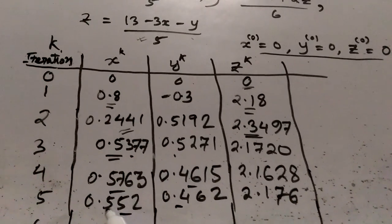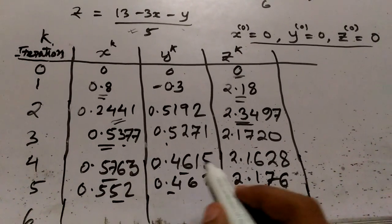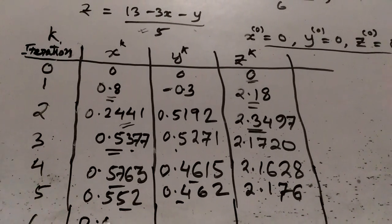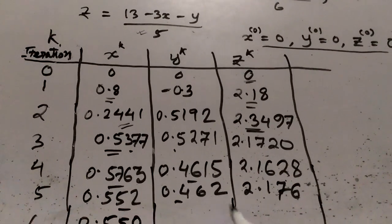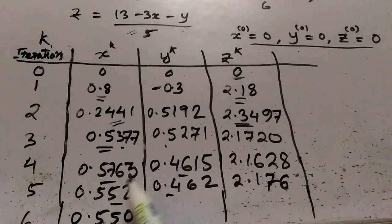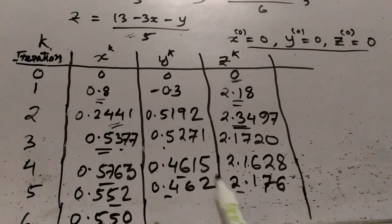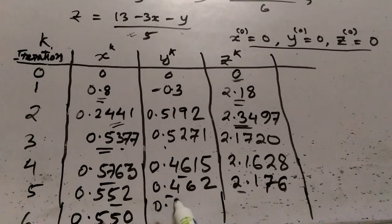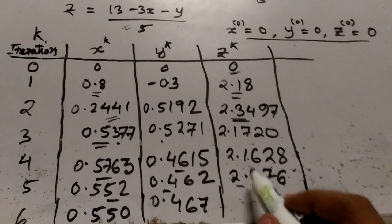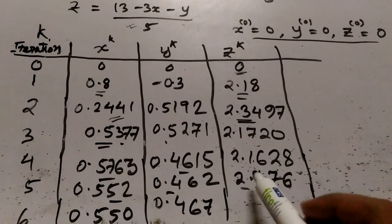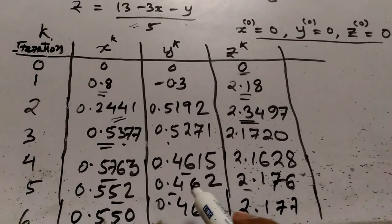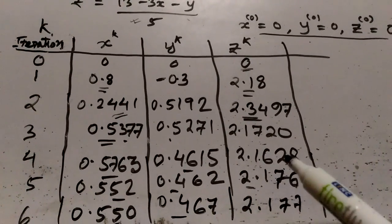In the sixth iteration, I calculate x from the previous y and z values as x = 0.550. Then I calculate y from the current x and previous z as y = 0.467. Lastly, z from the current x and y values is z = 2.177.